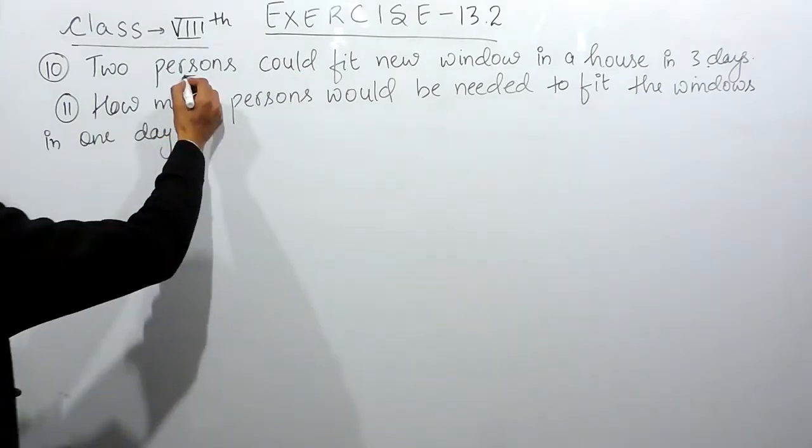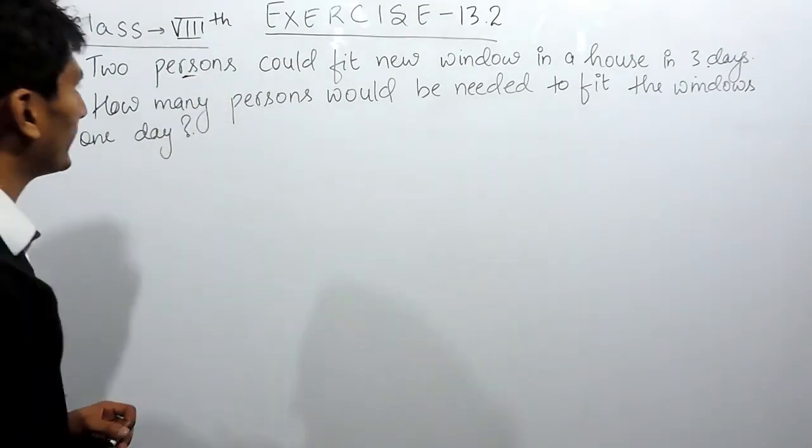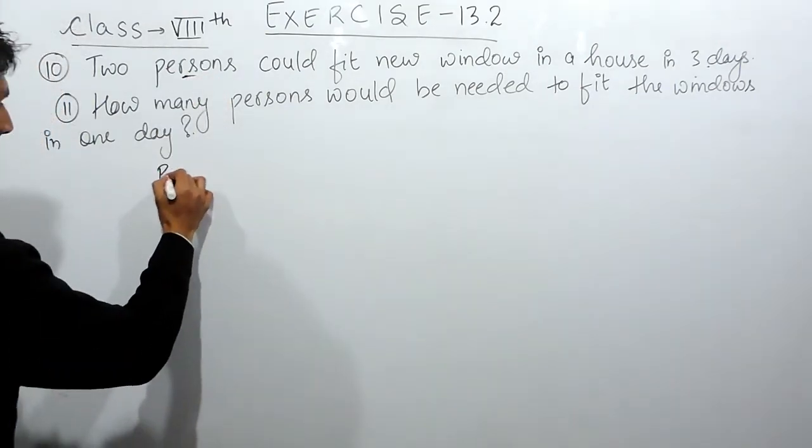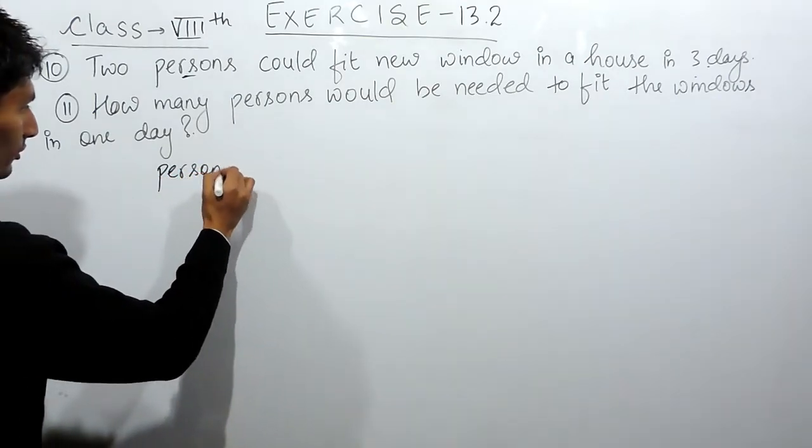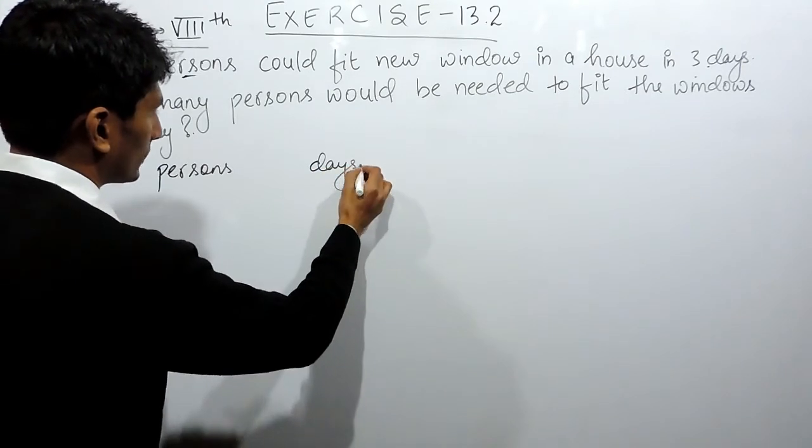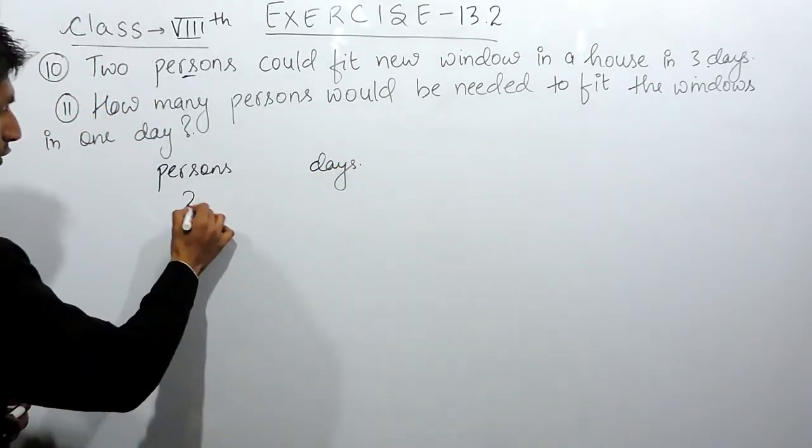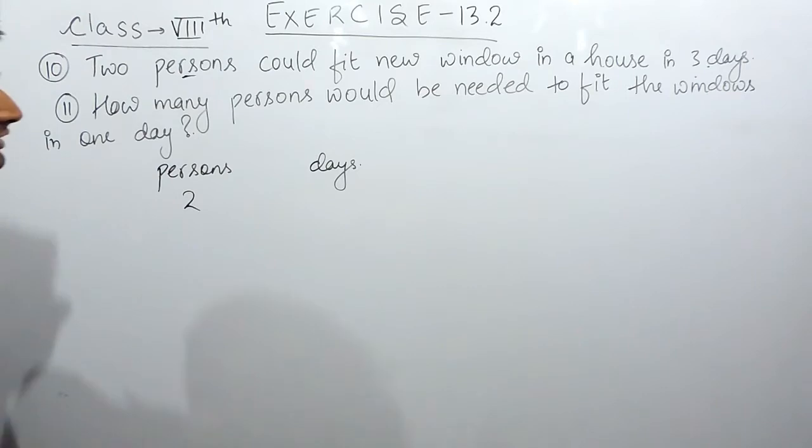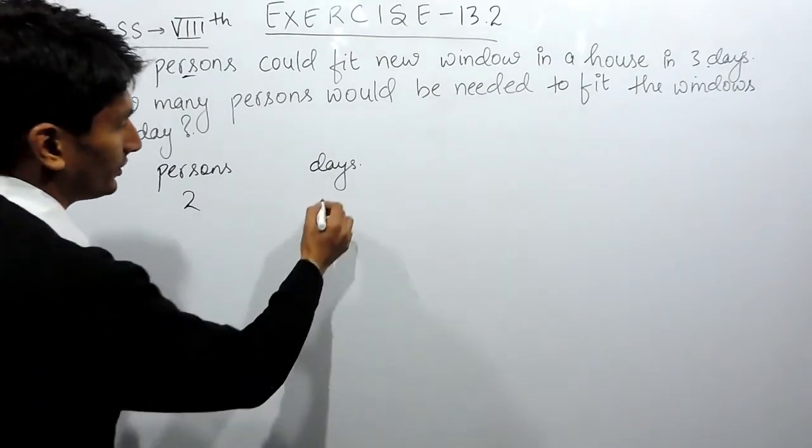So first of all, let's check the number of parameters. There are two things. The first is the number of persons. The second is the number of days taken by them to complete this work. So it is given that two persons can complete this work in three days.